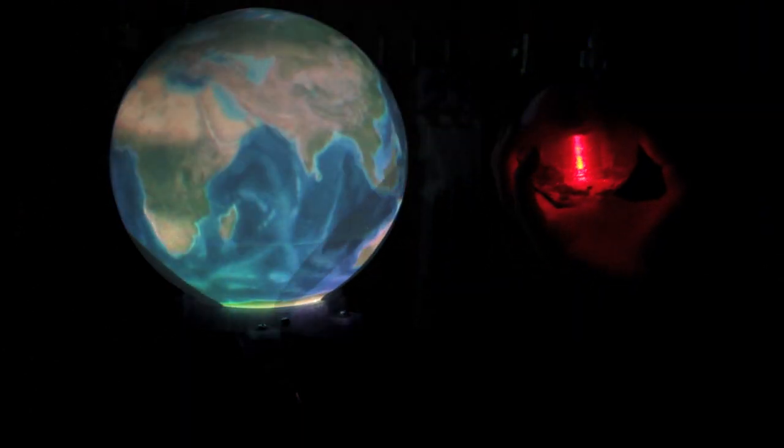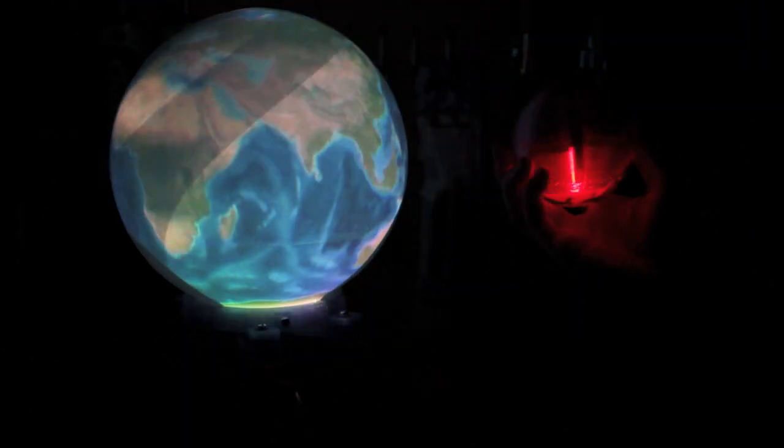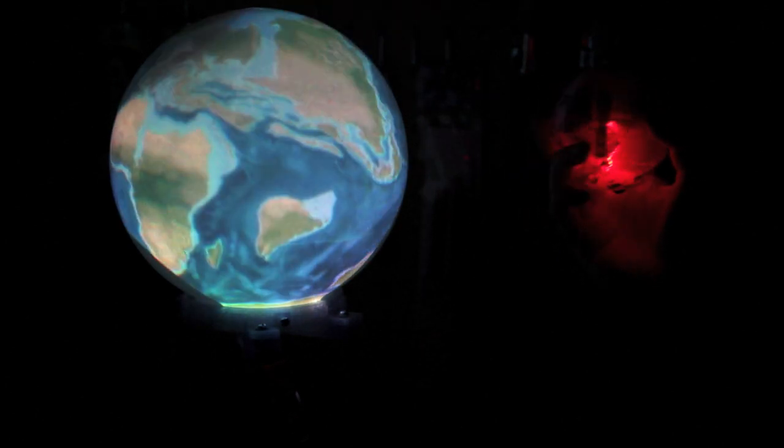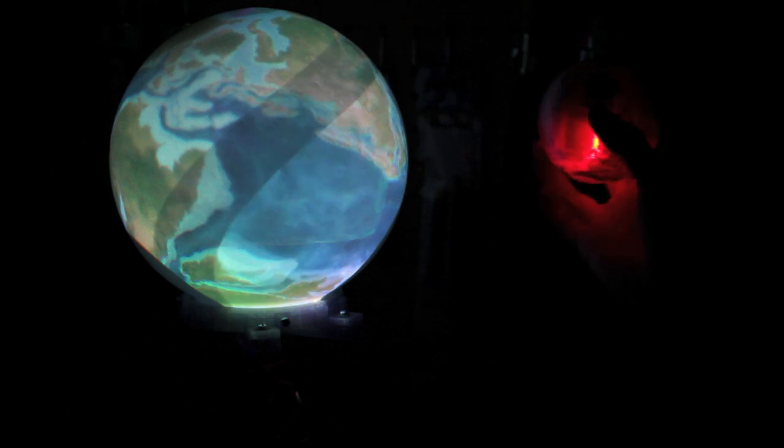If I flip the controller over, it changes to a mode where rotating the controller scrolls through images on the Snowglobe. You can see here that continents are forming, probably in reverse.